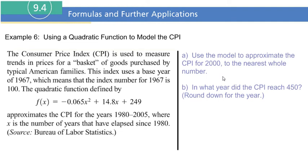So here are the two questions. Use the model to approximate the Consumer Price Index for the year 2000 to the nearest whole number. The x stands for the number of years. So if we're going to find what the approximate CPI is, it starts at 1980. We would have to take the year 2000 and subtract 1980, which is 20, which means that right there is going to be our x.